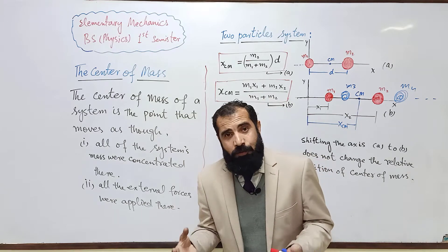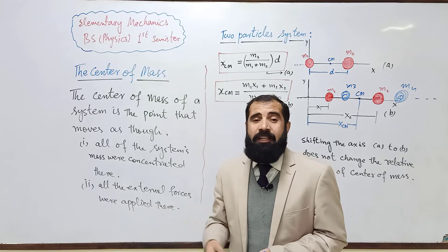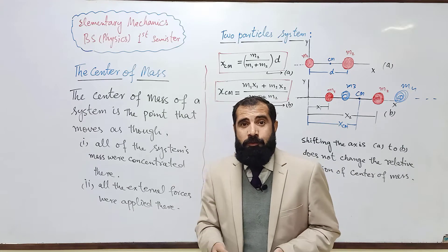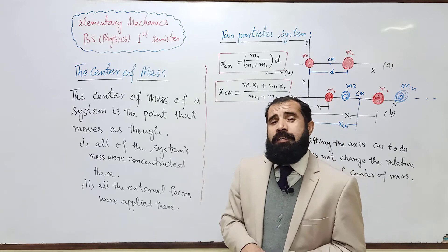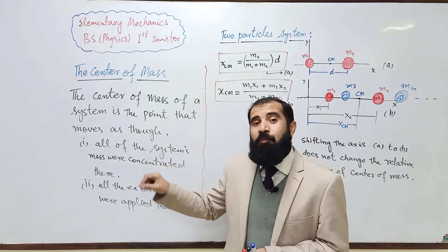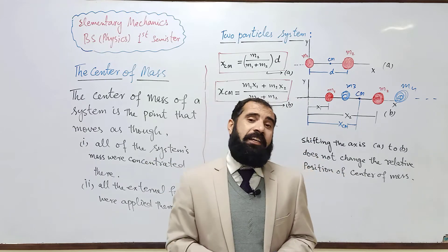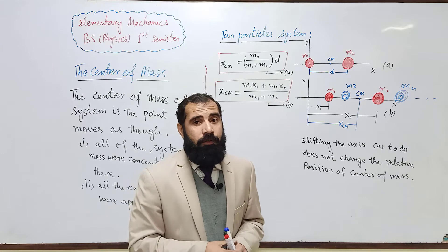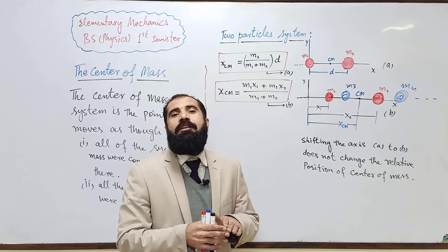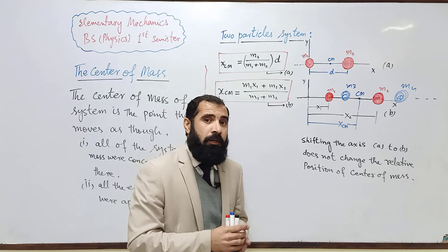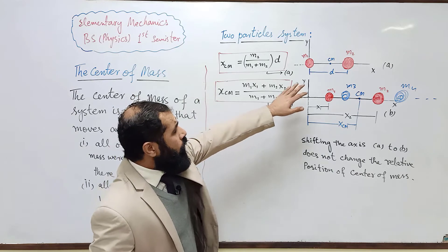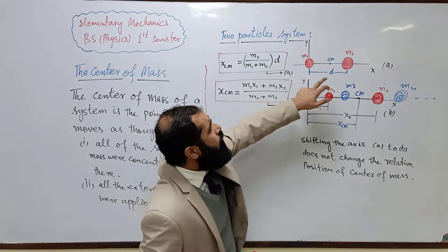If a system you are considering is in motion, it will have external forces acting on it. We can say that all those forces act on that single point which is called the center of mass. So to locate the center of mass of a two-body system is very easy. We begin with the two-body system and then generalize it to a many-particle system.